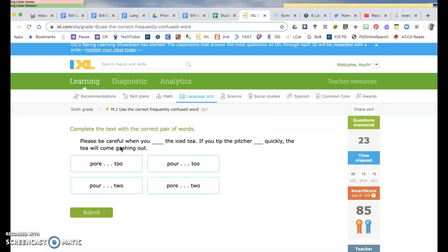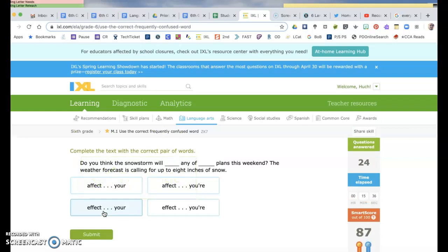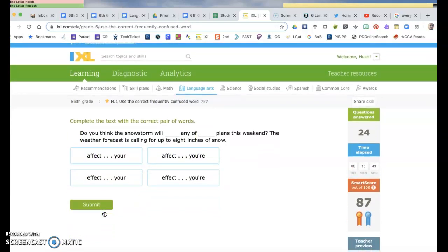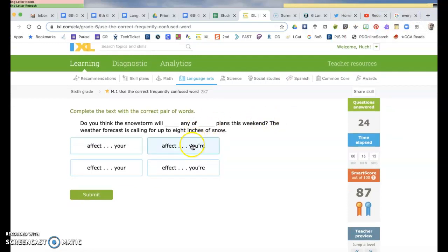Please be careful when you pour the ice tea. So you don't want the one that means pore in your face. This means pour, P-O-U-R. So I'm looking at this one or this one. If you tip the pitcher too quickly. So this is T-W-O like the number, so I'm going to want this. Do you think the snowstorm will affect? Remember, affect when it is an action, it starts with an A. That's what we want here. Effect. So think of like a snowstorm might have an effect of closing school.